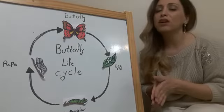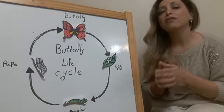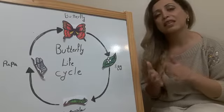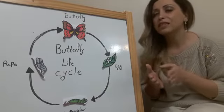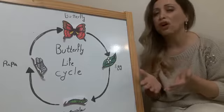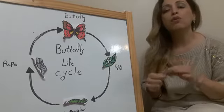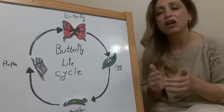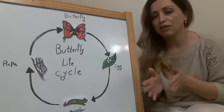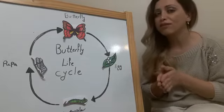Butterflies are insects. They have two to four wings, they have six legs, and they have different colors. There are more than 17,000 kinds of butterfly in the world, so you can see them everywhere.